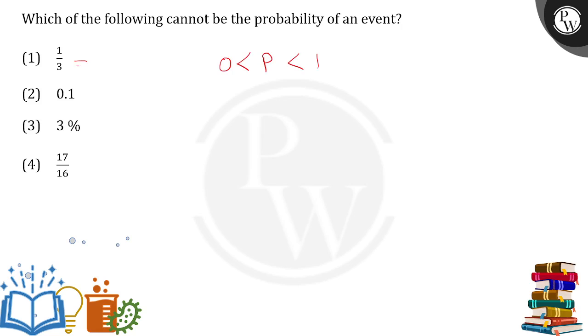When we say 1 by 3, that is 0.333, right? 0.1 is already in that range. 3 percent basically means 3 by 100, which is nothing but 0.3 - that is also fine with us. 17 by 16...